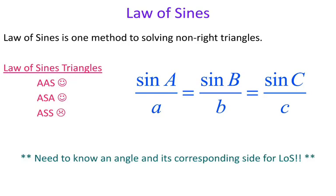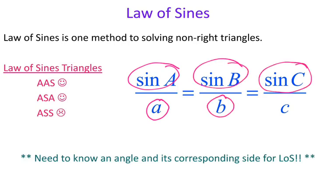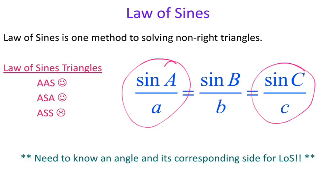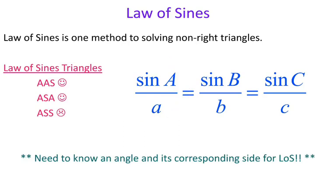Law of Sines is a ratio of the sine of the angle with its corresponding side on the bottom. Capital letters denote angles and lowercase letters denote sides. So: sine of A over side a, sine of B over side b, sine of C over side c. You'll set up two ratios at a time and cross-multiply. The key requirement is that you need to know an angle and its corresponding side to use Law of Sines. If you don't have that, it's a Law of Cosines problem.